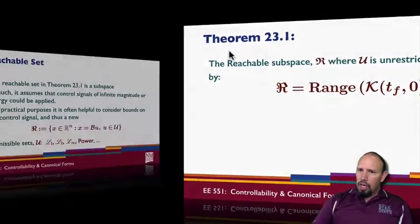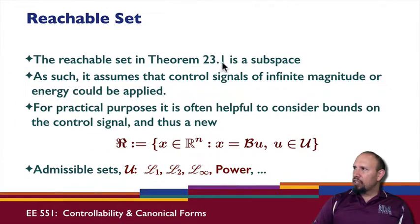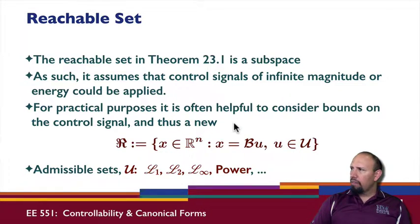It can be shown that the reachable set is actually a subspace. As such, it assumes that control signals could have infinite magnitude or infinite energy. It's unrestricted. Now for practical purposes, it's often helpful to consider a restriction on the kinds of controls.